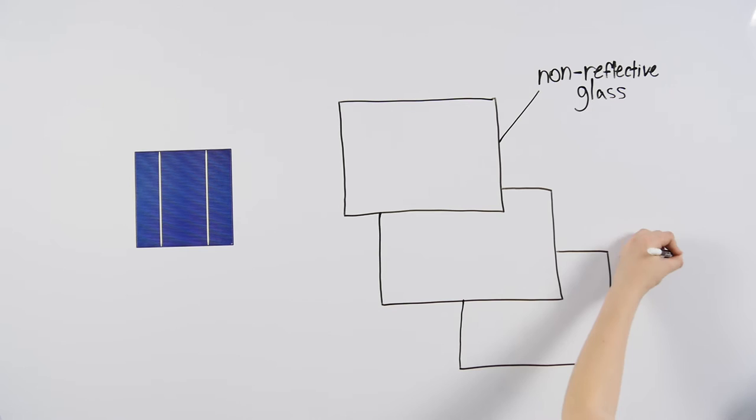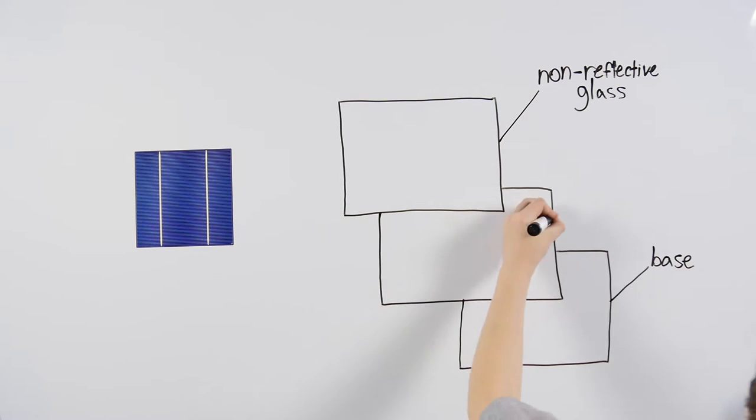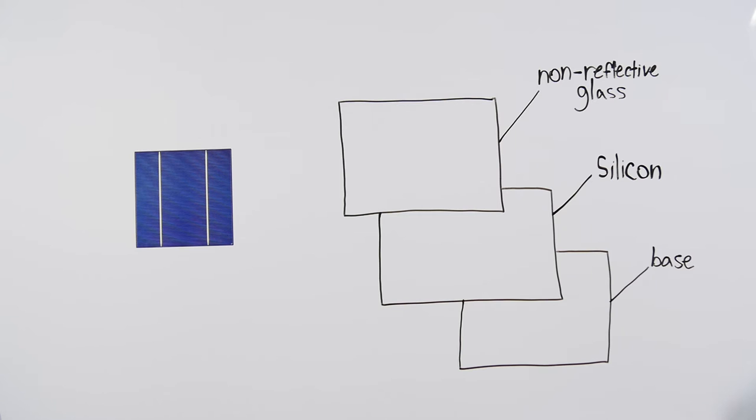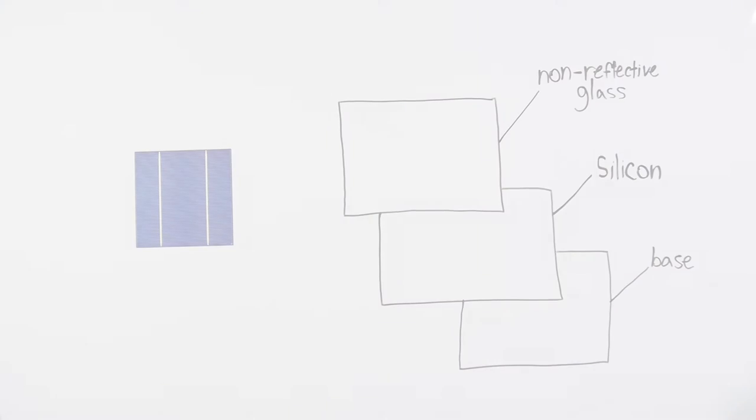The bottom is just the base. The middle layer is the really important one. The middle has two layers of silicone in it, but it is the interaction between these two layers that allow for the photovoltaic effect to take place.